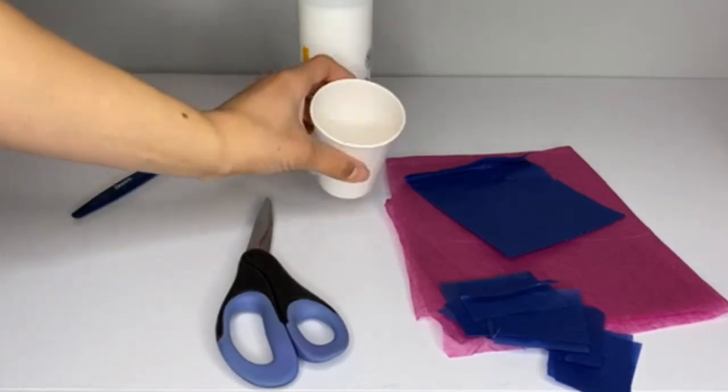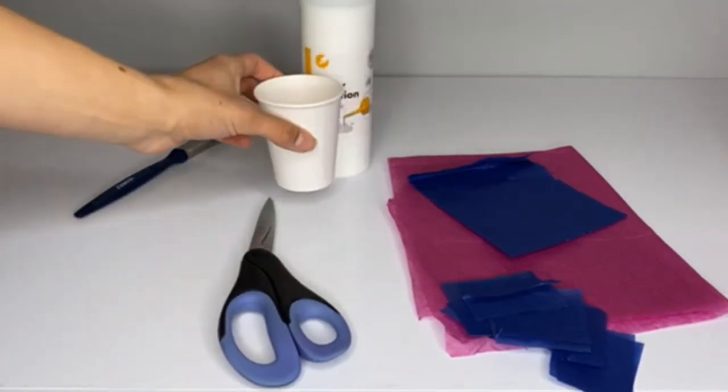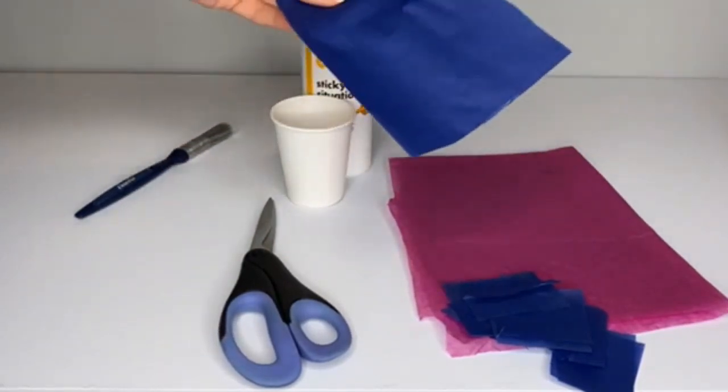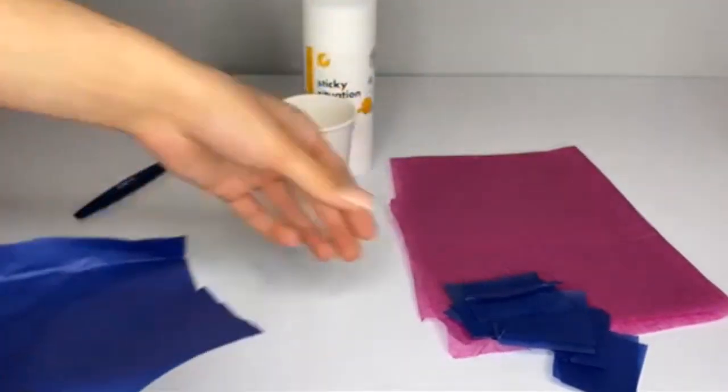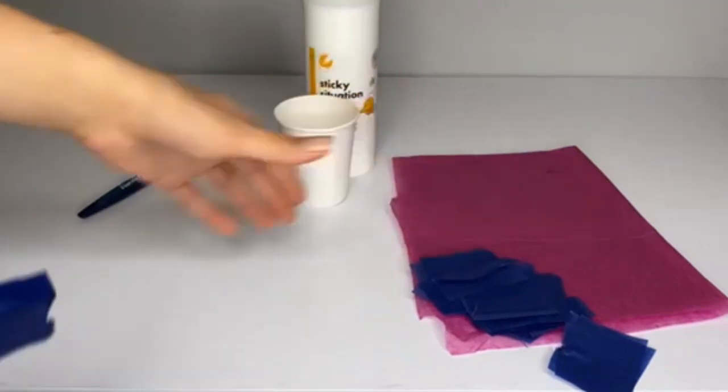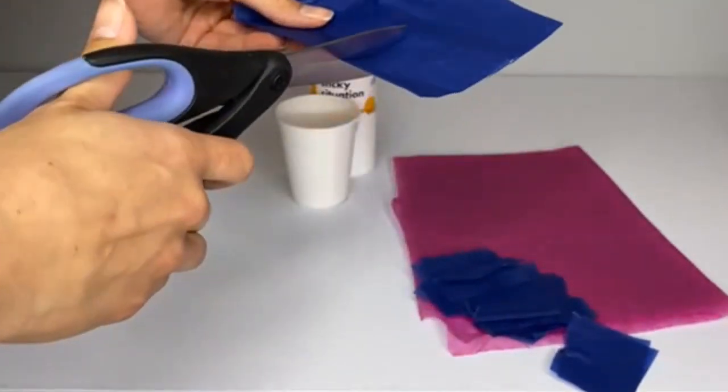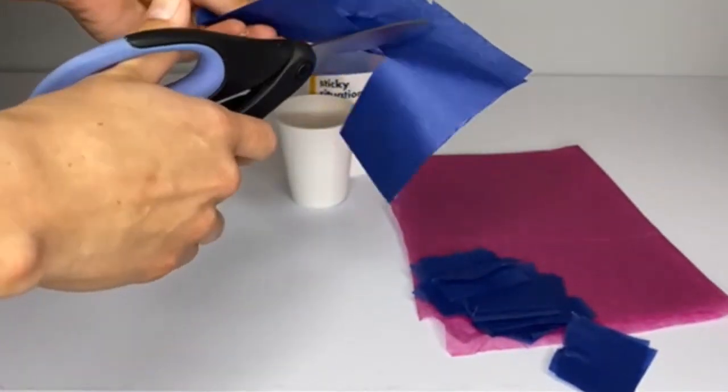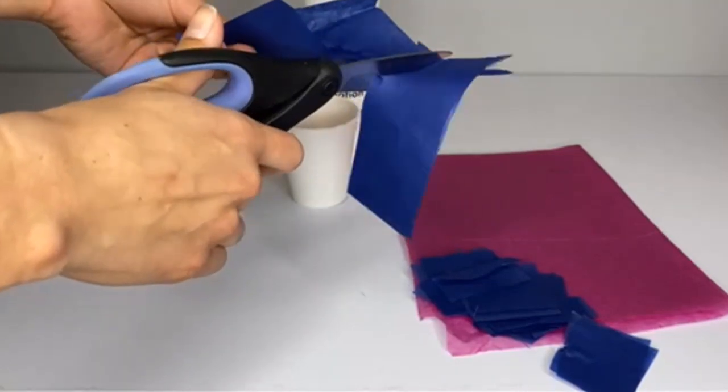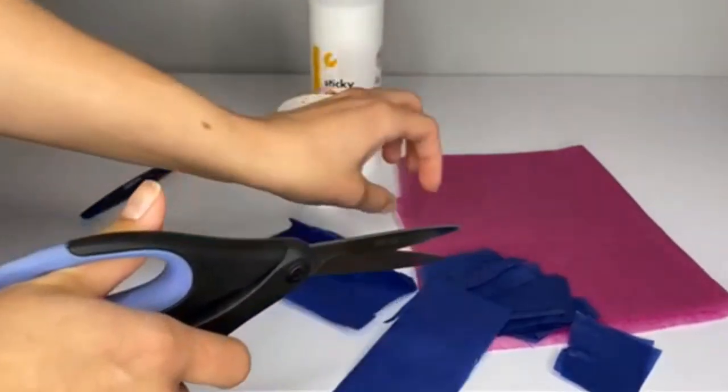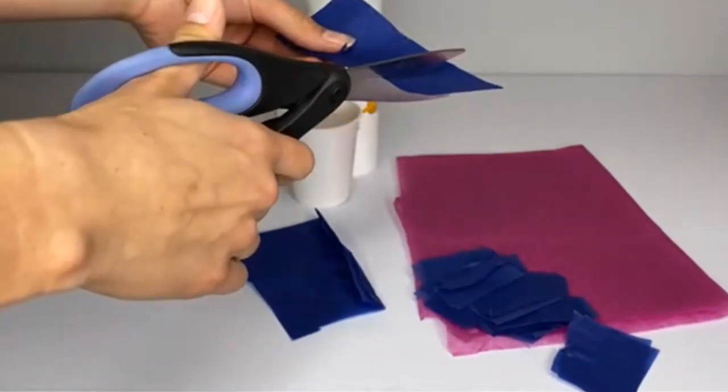Now you can start decorating your character. You will need to pour some PVA glue into a pot and then cut your tissue paper into small pieces like this. You can use as many different colors as you like for this step. Today I am just going to use two. I will use the pink to make the unicorn's horn and the blue to make its body.